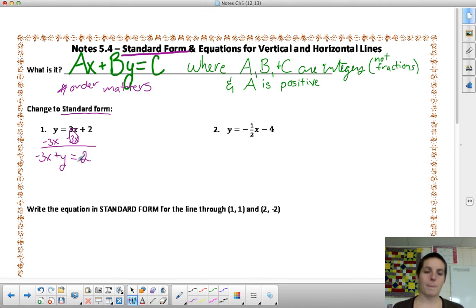We have proper order, where A, B, and C are integers, so no fractions, but our A value, the number in front of x, is not positive. So, we need to take care of that. To do that, we need to multiply every term in this problem by negative 1, or multiply the left by negative 1 and multiply the right by negative 1. So, positive 3x, negative y equals negative 2. Now, we have standard form.